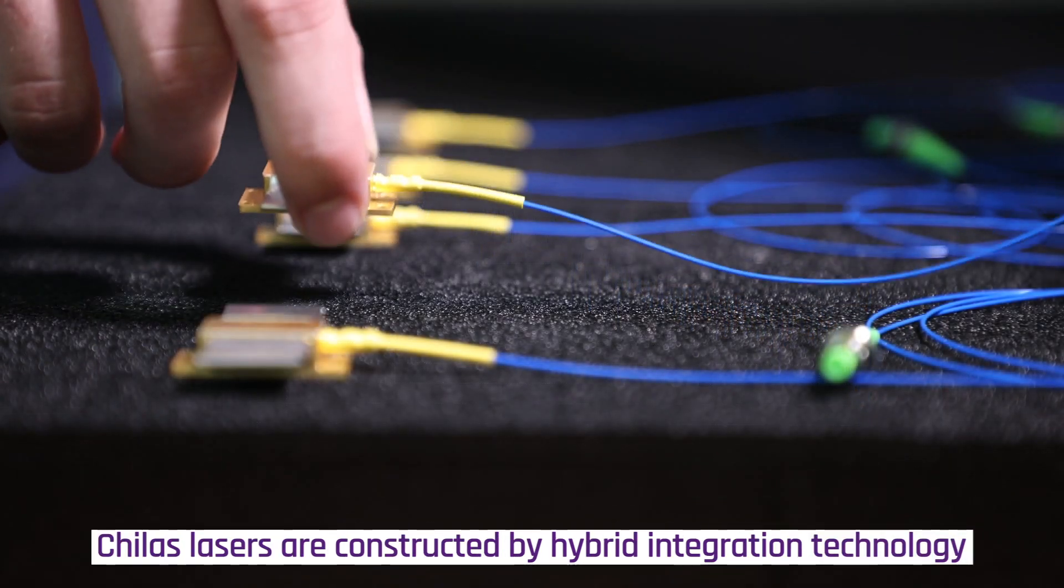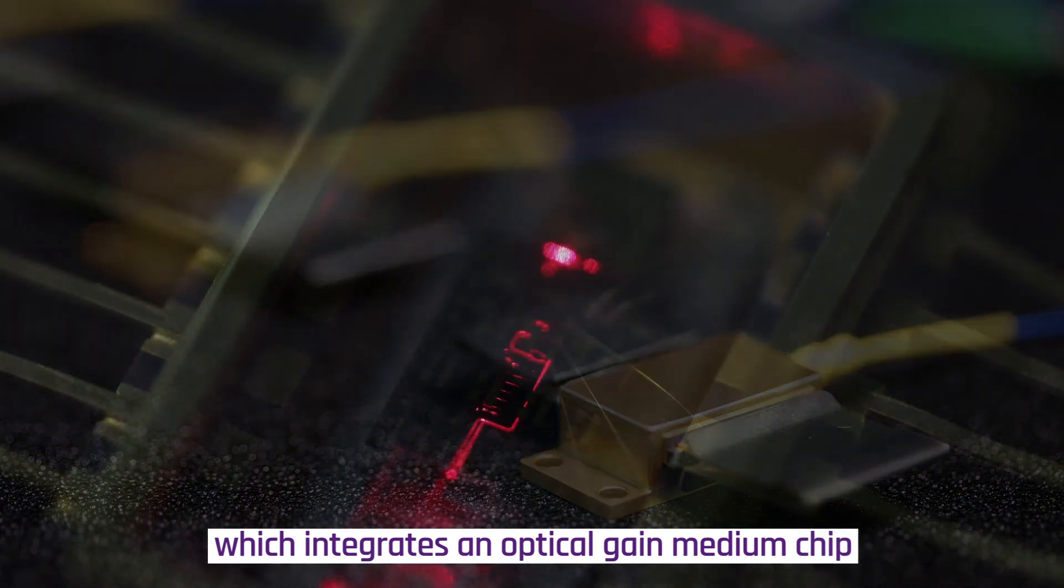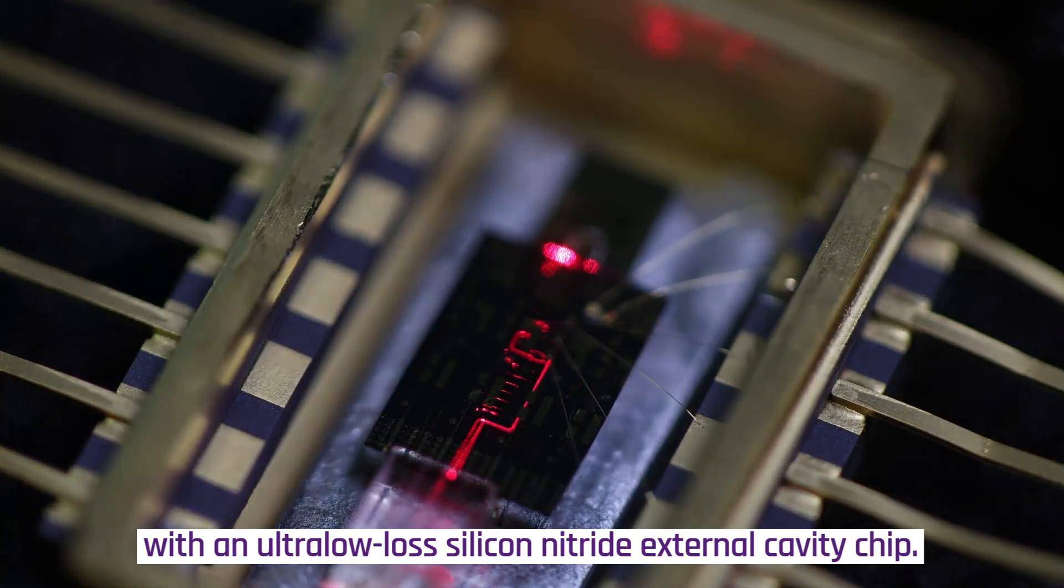Chilas lasers are constructed by hybrid integration technology, which integrates an optical gain medium chip with an ultra-low loss silicon nitride external cavity chip.